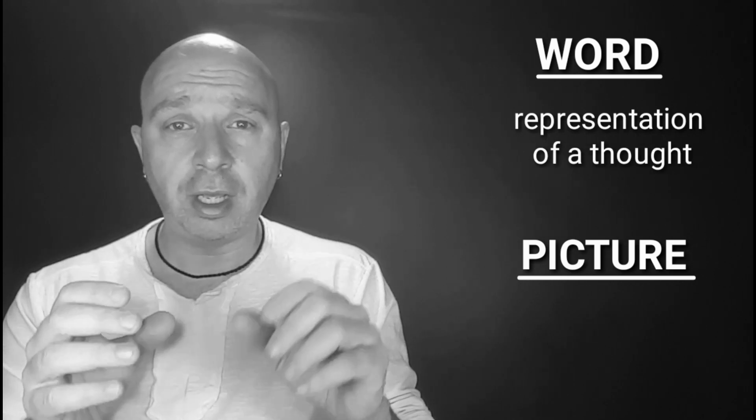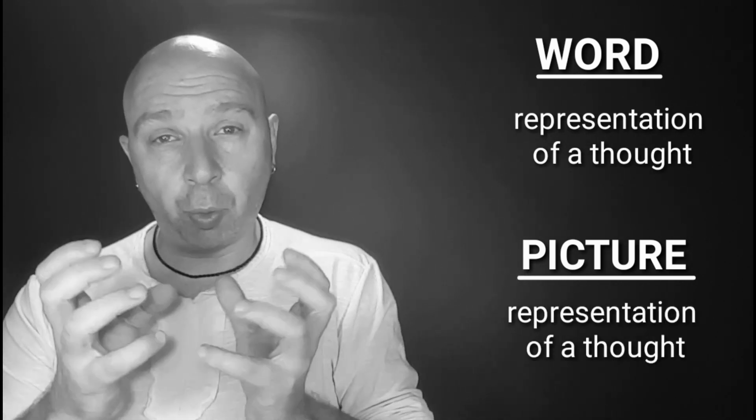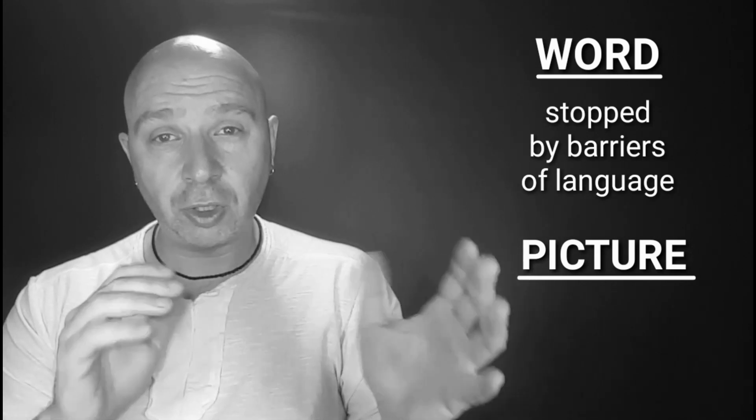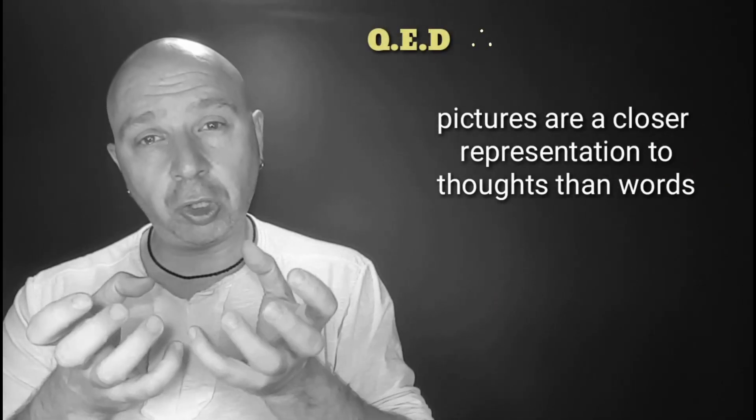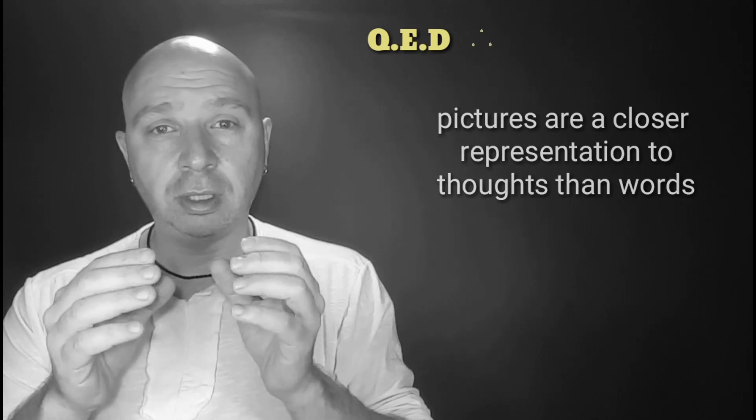Words are a representation of a thought. A picture is a representation of a thought. But a word has disadvantage that it is stopped by the barriers of language. So a picture of a dog would be understood by all the world. They would see it, have different names for it, but it would be the same thing. But the actual word would have to be translated to each language. So pictures are a closer representation than words are.